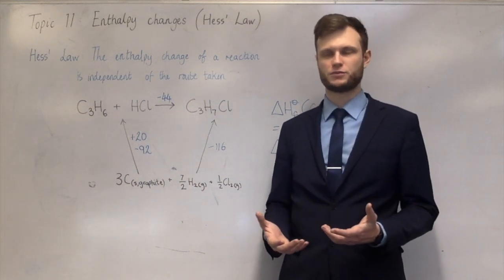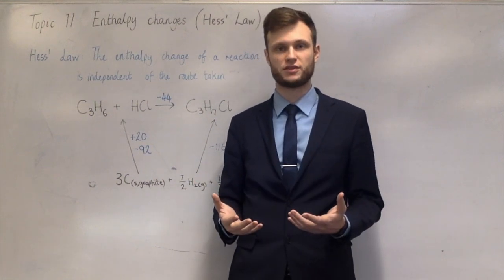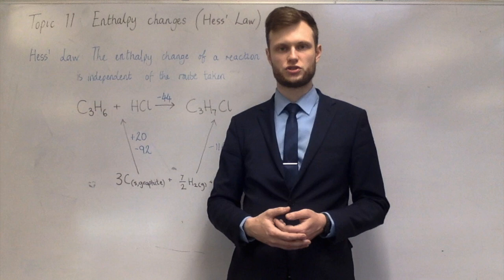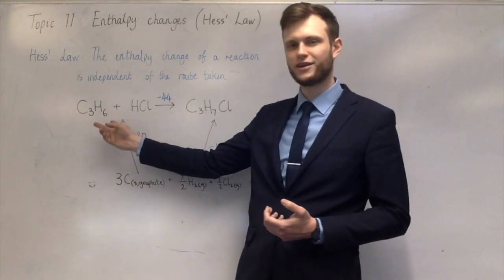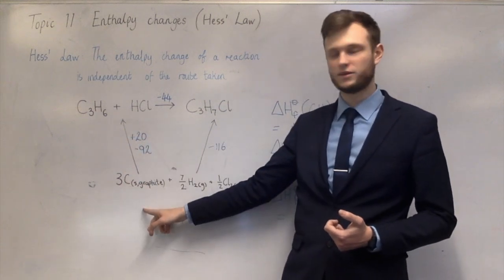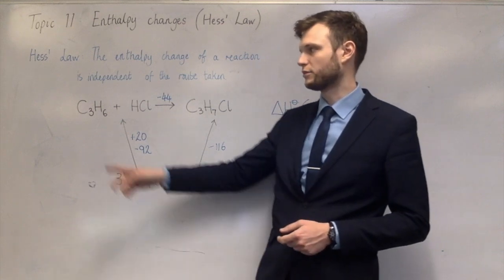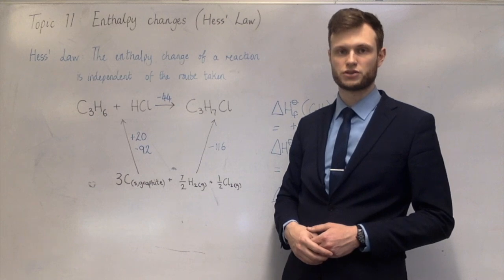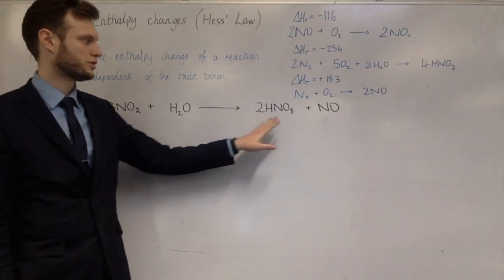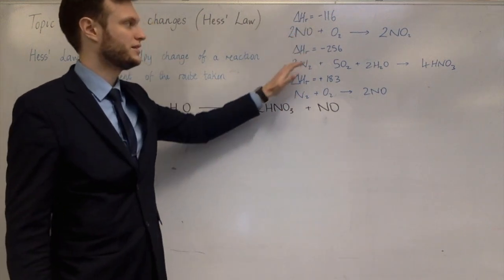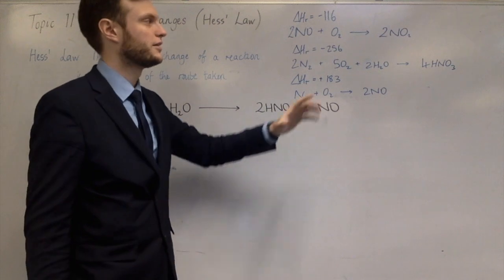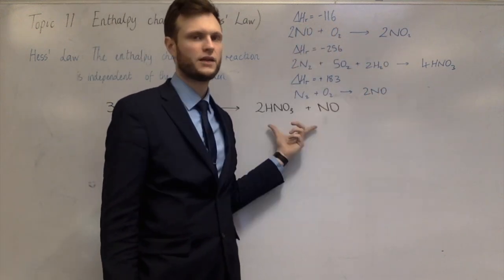The last type is with unfamiliar data — not combustion or formation, but other reactions which may include some formation or combustion reactions but could be other reactions too. The approach is very similar: you need to find a way of getting from the reactants to the products by a different route. For this reaction — nitrogen dioxide reacting with water to make nitric acid and nitrogen monoxide — we need to combine three given equations to get from the left-hand side to the right-hand side. The way I'd suggest is to find something which only appears once in these equations and link it to the main equation; it's almost like playing a game of mix and match.